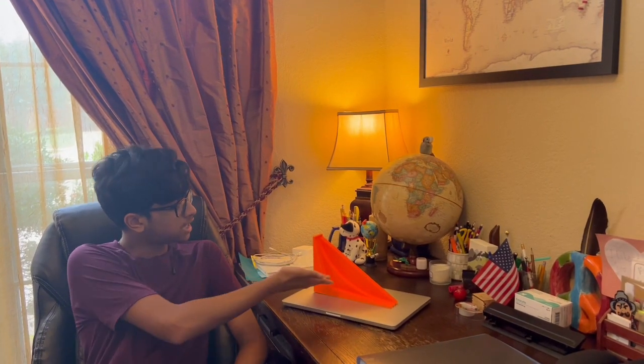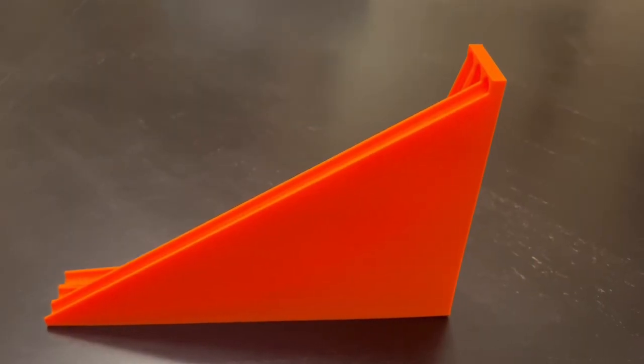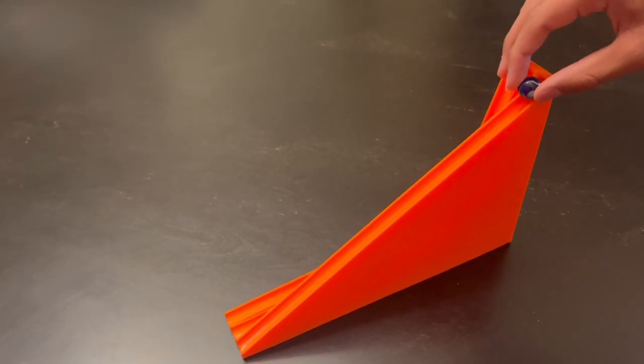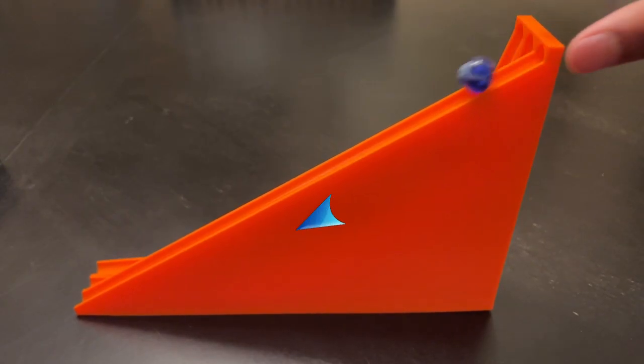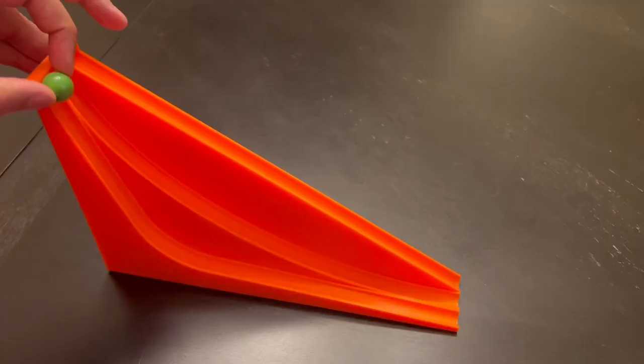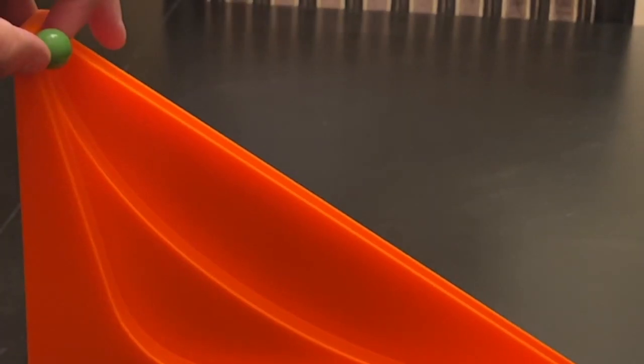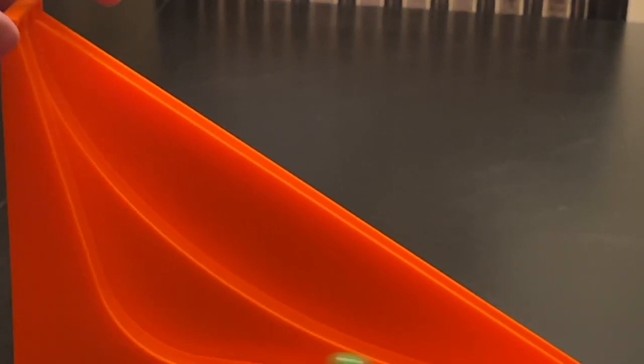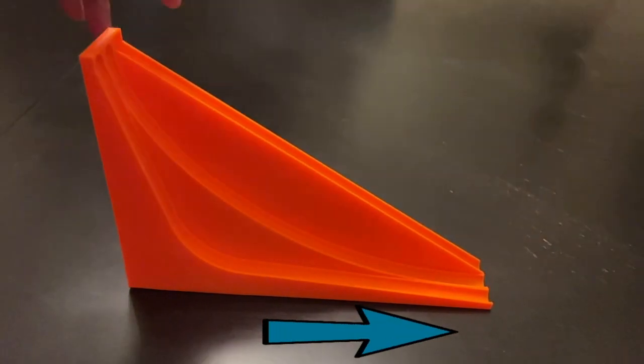Now let's see why the brachistochrone curve wins. Even though the linear ramp is the shortest, it fails to gain sufficient kinetic energy because its path doesn't align with the pull of gravity. The steep ramp does have a surge in kinetic energy from the initial drop, but its excessive length ultimately results in wasted time.